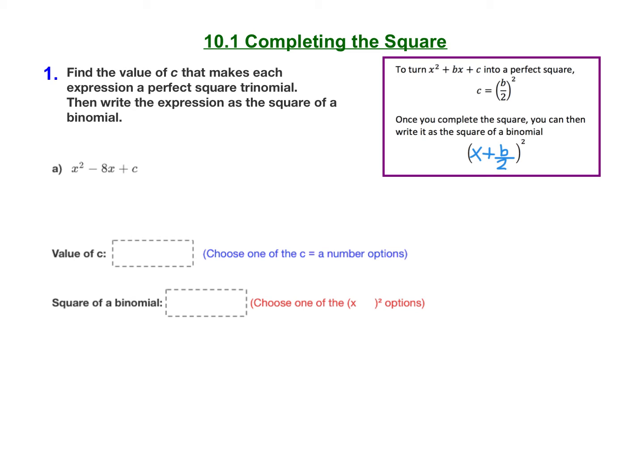So here in this problem a, our b value is negative 8. So if we use our formula c equals b over 2 squared, we need negative 8 divided by 2 squared.